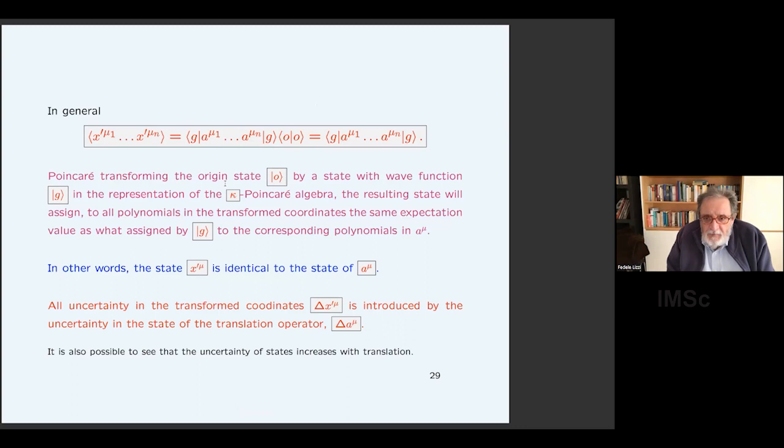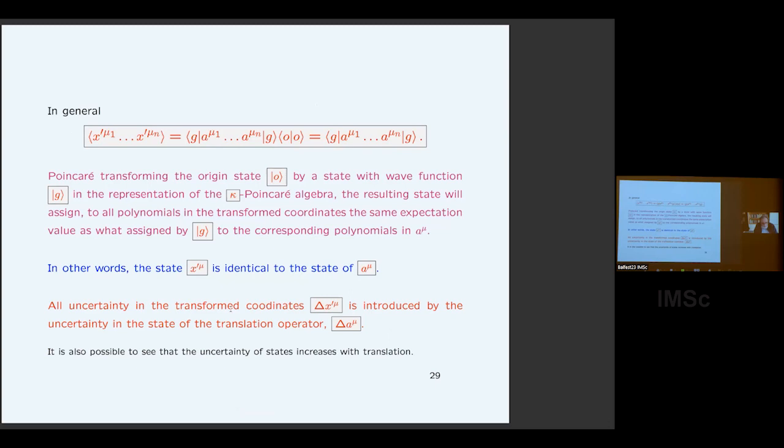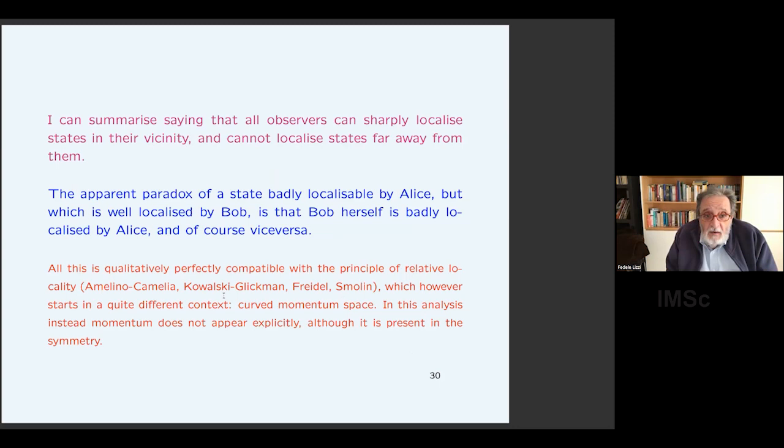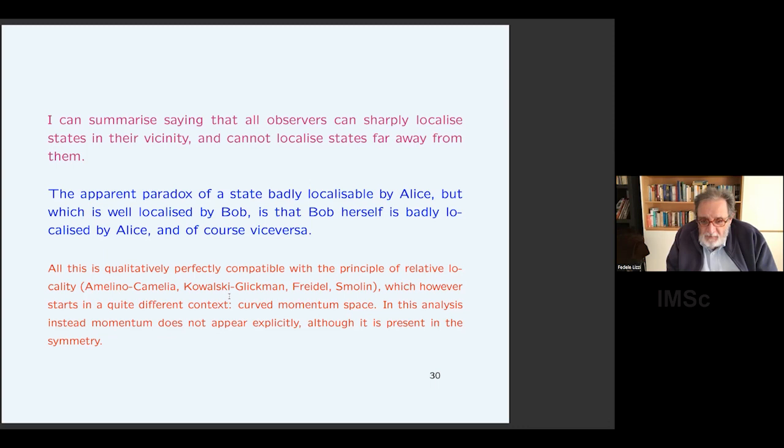The expectation value of the transformed coordinates is completely defined by translations. Translations are simple, because two different observers are comparing position and not directions. I can have expectation values of objects. All the uncertainty when I transform, I increase uncertainty. If I have a chain of transformation, the state sort of gets degraded in the knowledge. This is ideally, ideologically compatible with the relative localization of Kowalski, Amelino, Freidel, and Smolin.